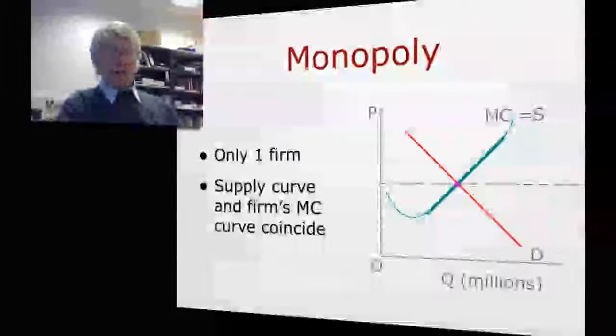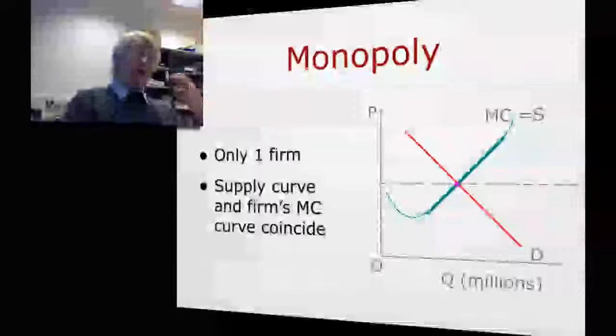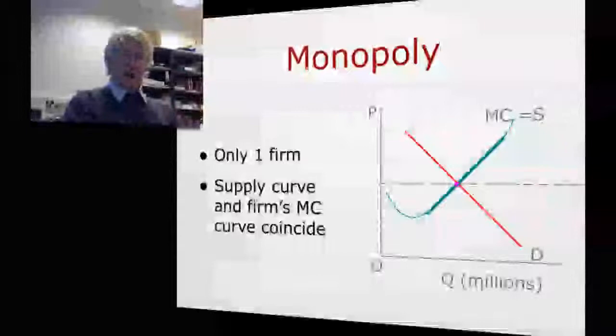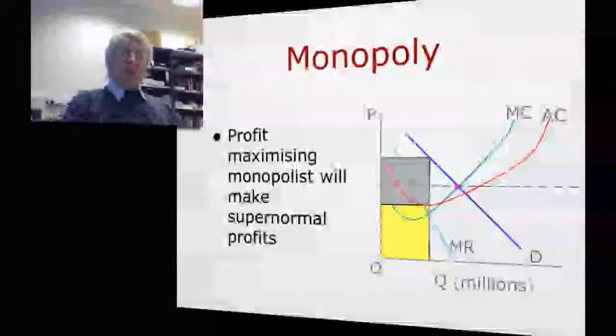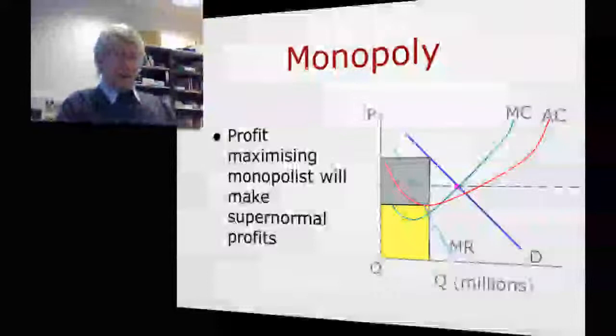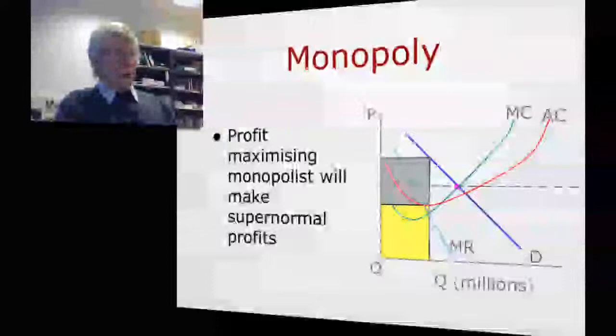Now the interesting thing about this is what that means for the monopolist in terms of making profits. If we look at some of the fairly standard treatment where we get marginal cost and average cost, you will see that the monopolist, by nature of the fact that they are monopolist and no one else can compete in the market, makes supernormal profits.